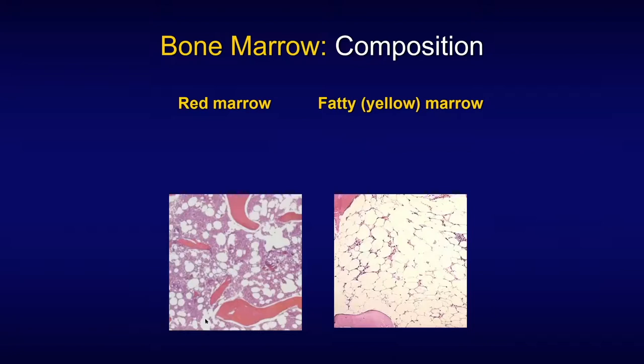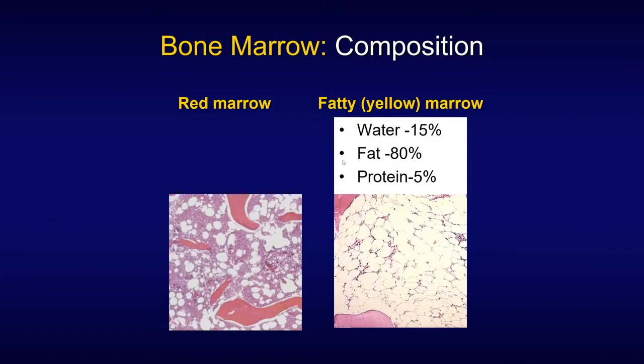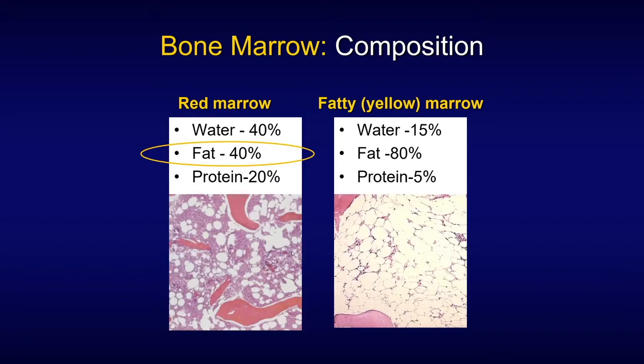Composition-wise, let's look at the histology of red marrow and fatty marrow. Fatty marrow is mostly fatty — it has 80% fat, and that's why it has its name. However, look at this big 40% fat content of red marrow. I think the proper title should have been low-fat marrow rather than red marrow. And believe it or not, we base almost the entire concept of bone marrow interpretation on MRI on this percentage, because water also has 40%. We're going to look into that ratio and see how it helps us understand what's next.